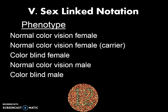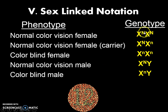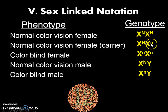We have to do allele notation, using colorblindness as our example — this works for any x-linked trait. Here are our possible phenotypes with their proper genotype notation. A normal color vision female is X^N X^N, where big N represents normal. A normal color vision female who is a carrier for the abnormal trait has one hidden lowercase recessive little n. A colorblind female can only be colorblind if she is homozygous for two abnormal little n's.